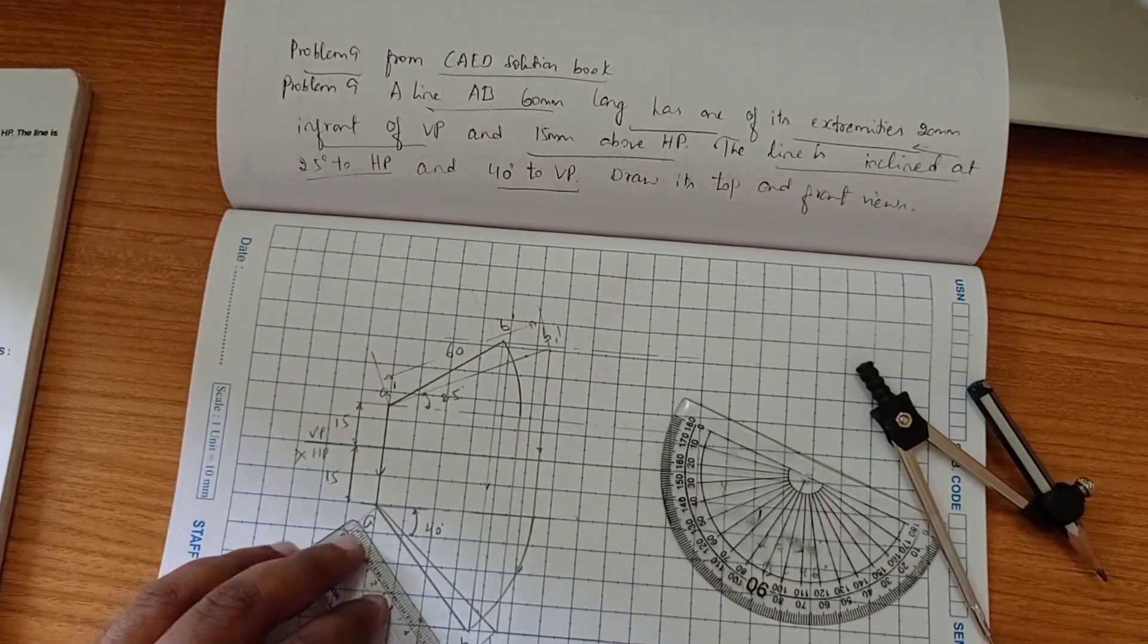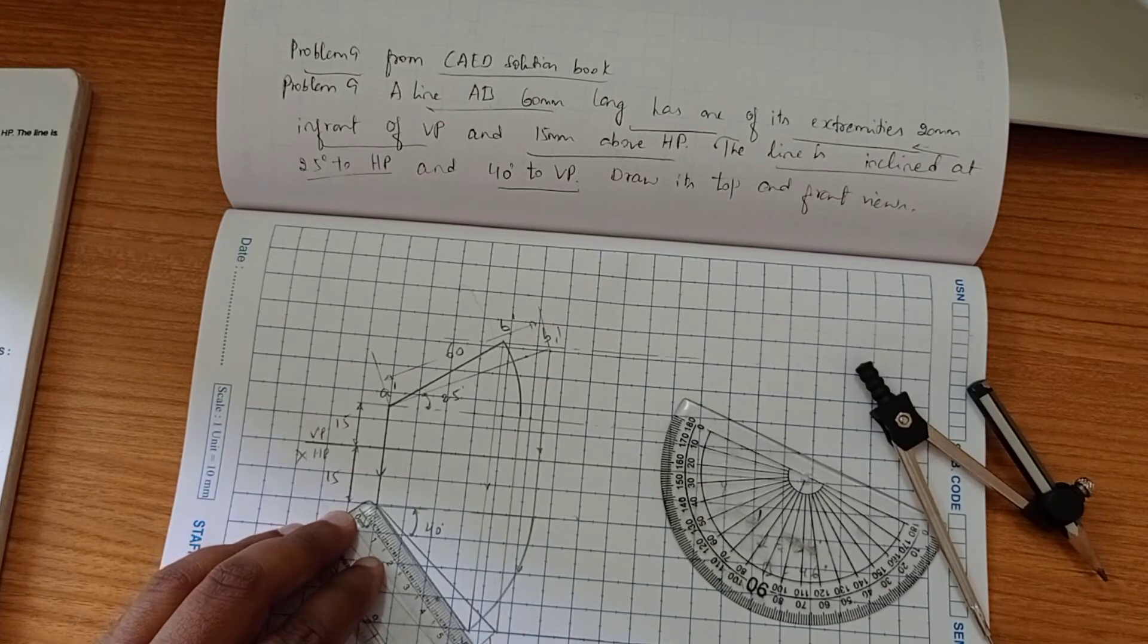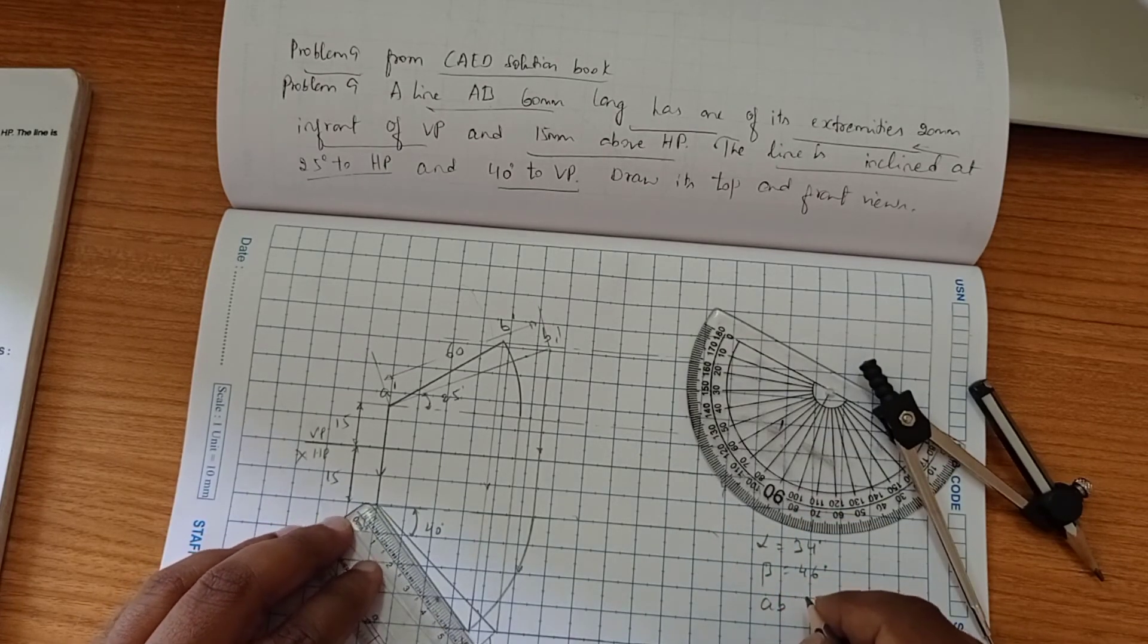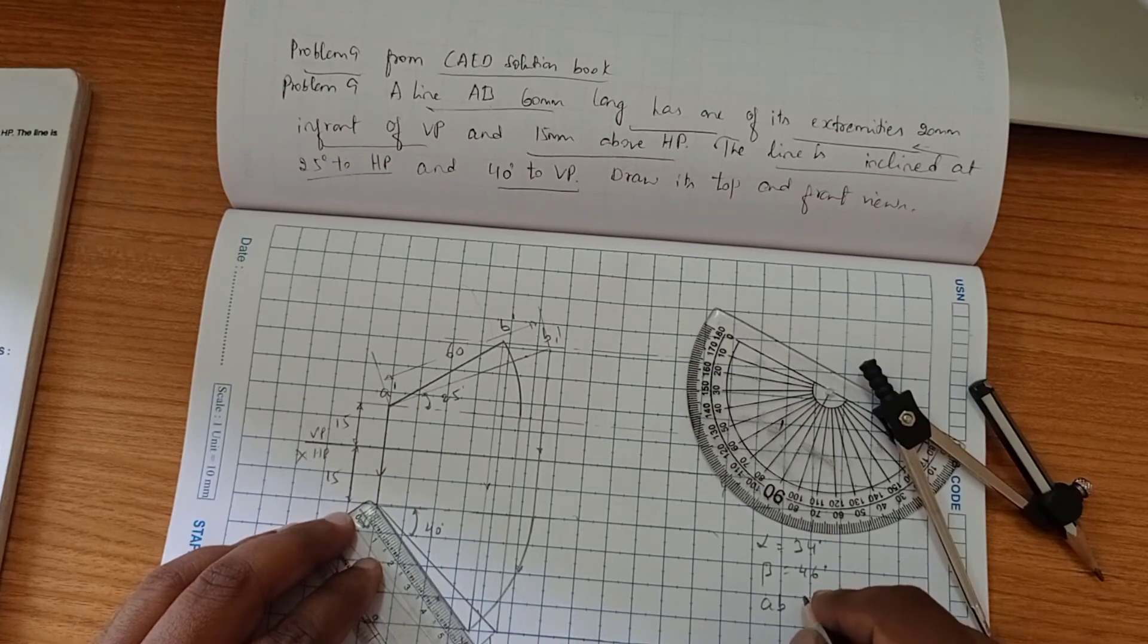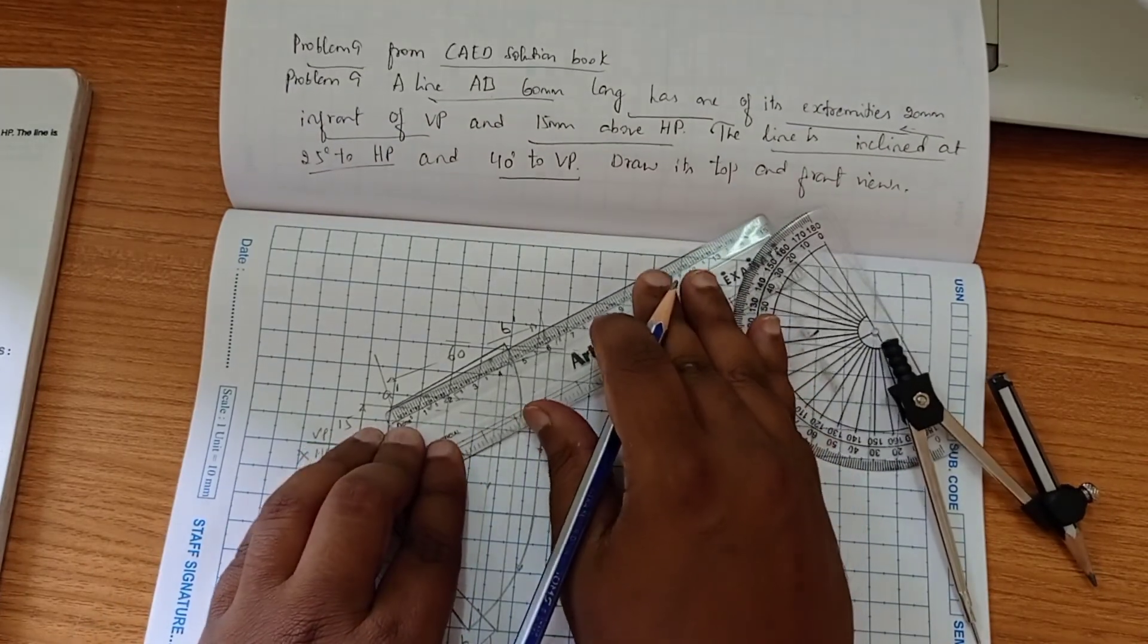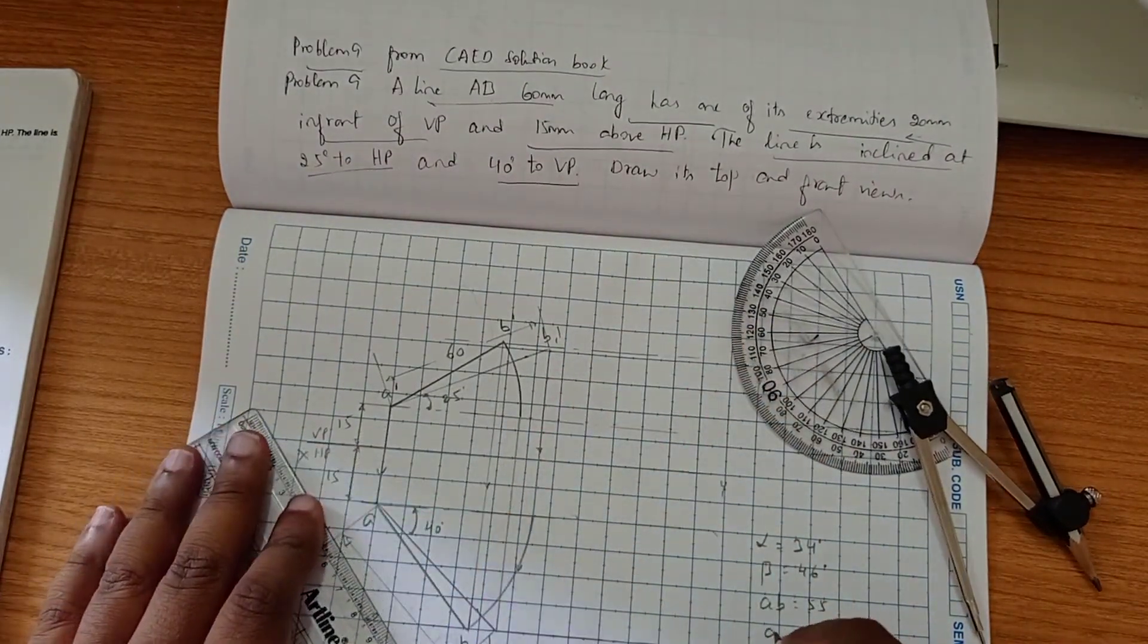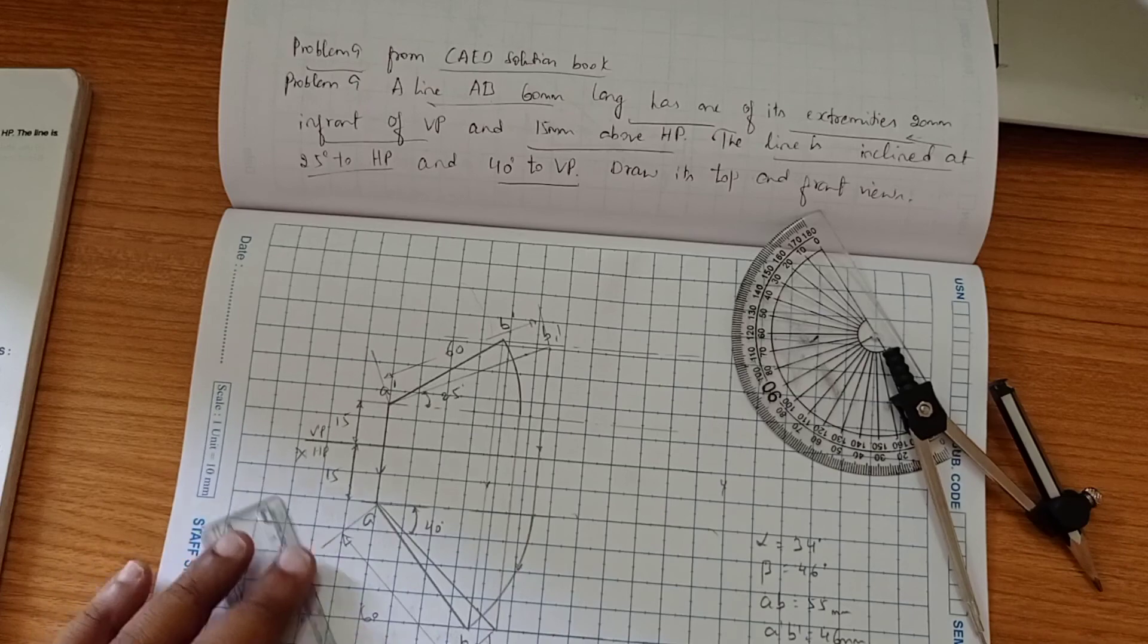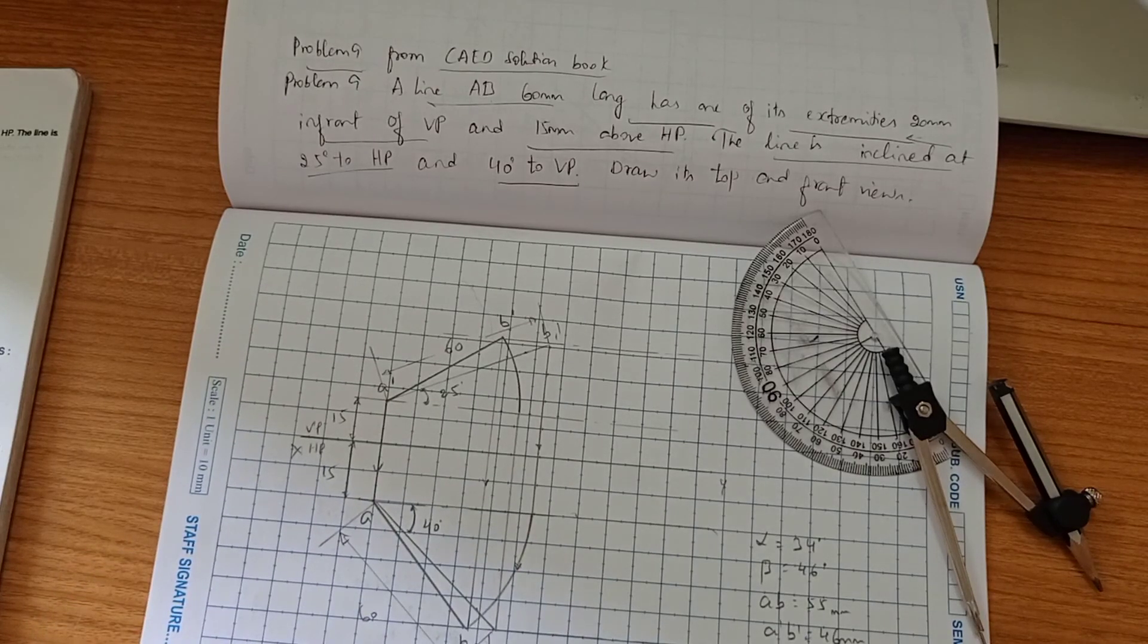The apparent length, A'B' we have 55 mm and AB we have 36 mm. This completes the problem. Thank you very much.